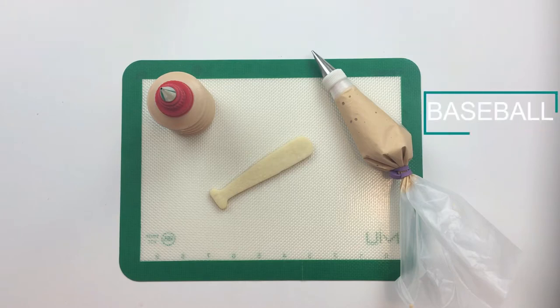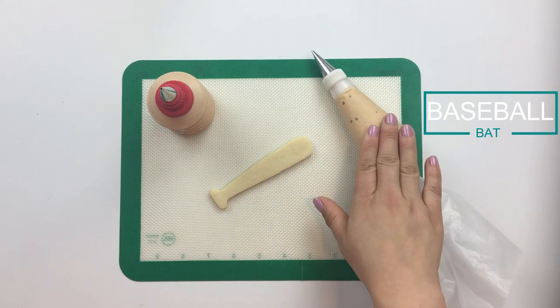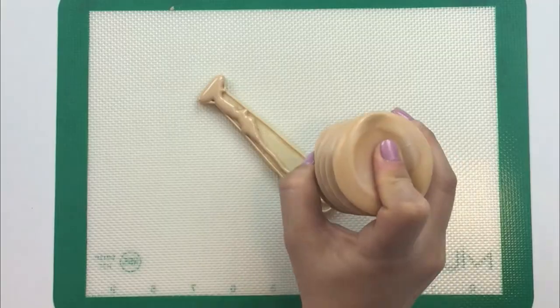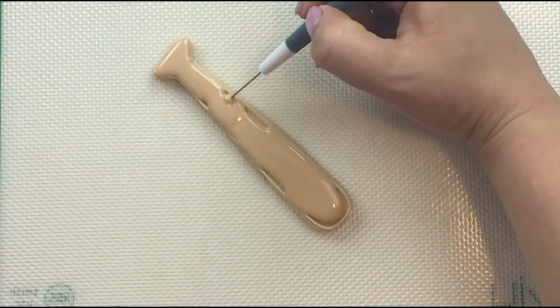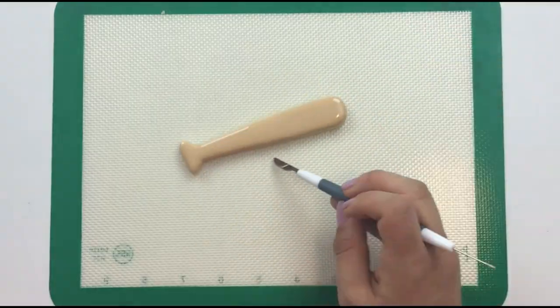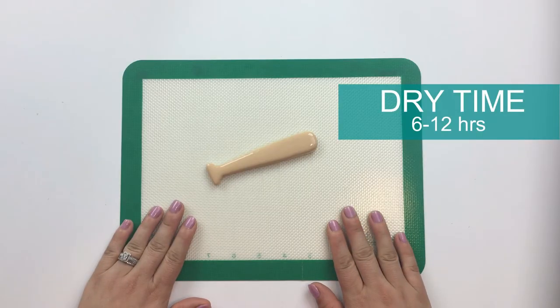For our baseball bat we'll be flooding it with icing that's a little bit of a lighter brown than the glove. Now we'll let the baseball bat dry for at least six to twelve hours before we go in and complete the rest of its details.